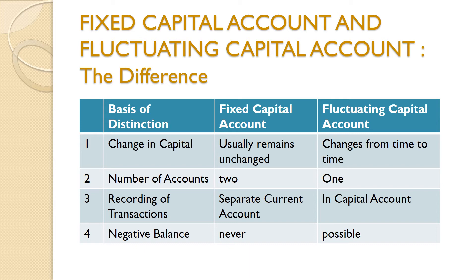The next distinction is on the basis of number of accounts. In fixed capital account, two accounts are maintained — capital account and current account. While in fluctuating capital account, only a single account is maintained, that is the capital account. Regarding recording of transactions: in fixed capital account, a separate current account is maintained to record all transactions relating to drawings, interest on drawings, interest on capital, salary, profit sharing, etc. But in fluctuating capital account, all these entries are maintained in a single account — that is the capital account.